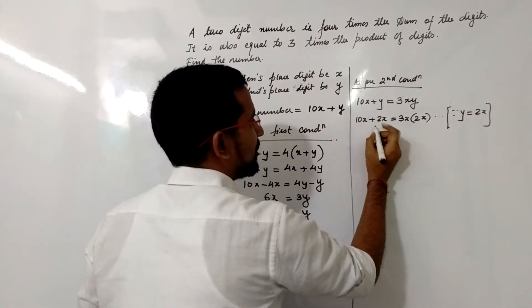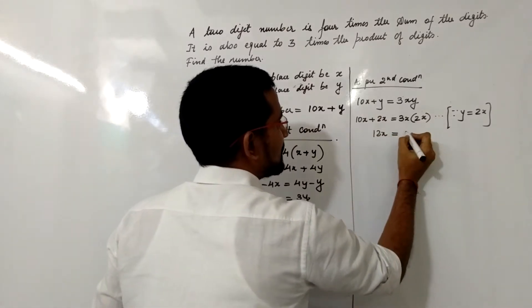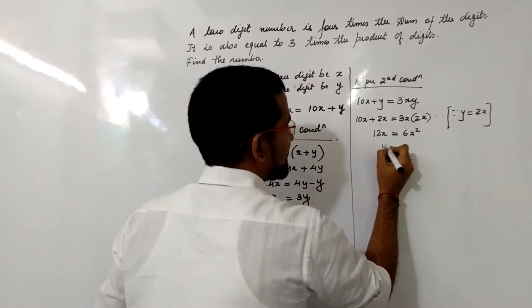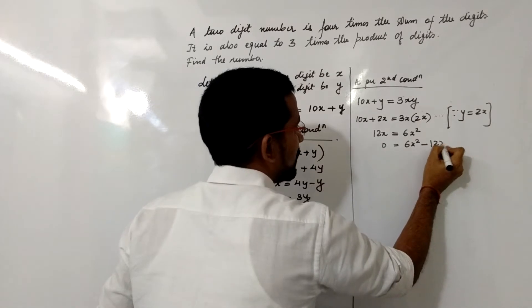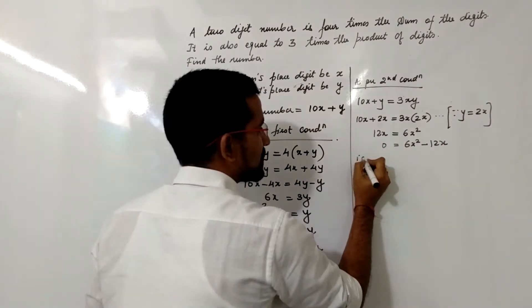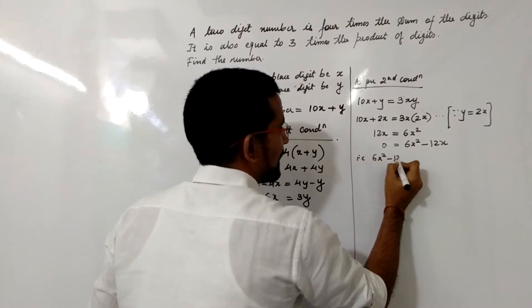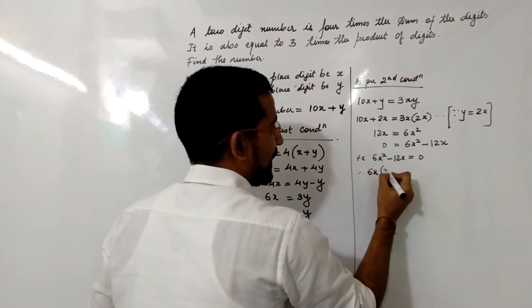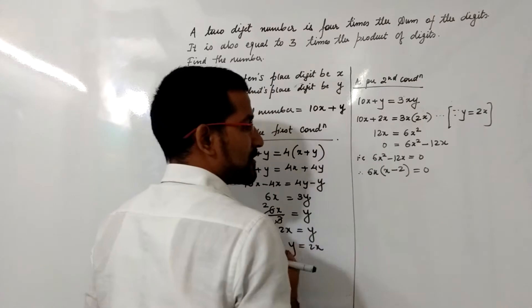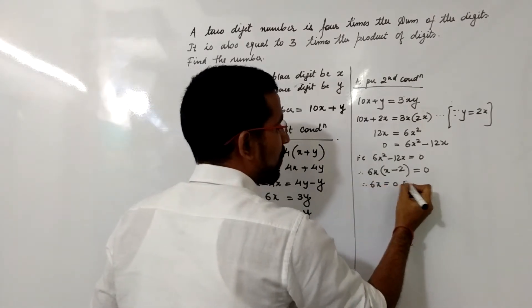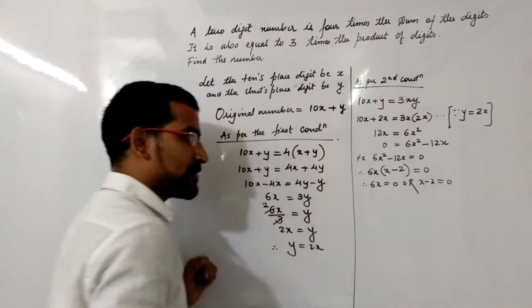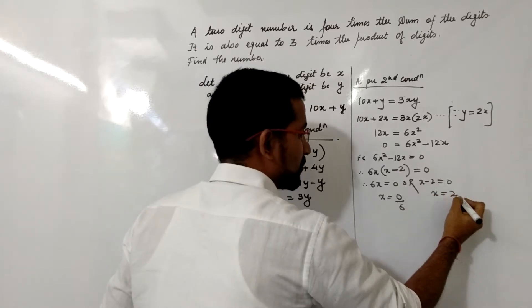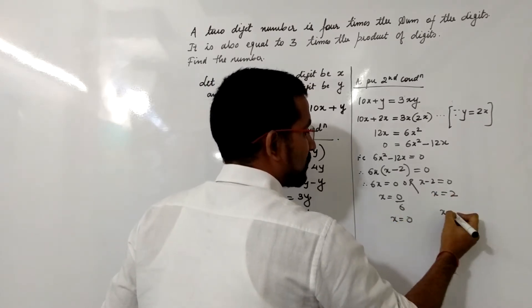The equation becomes 6x² = 12x. Shifting terms: 6x² − 12x = 0. Taking 6x common: 6x(x − 2) = 0. So either 6x = 0, giving x = 0, or x − 2 = 0, giving x = 2.